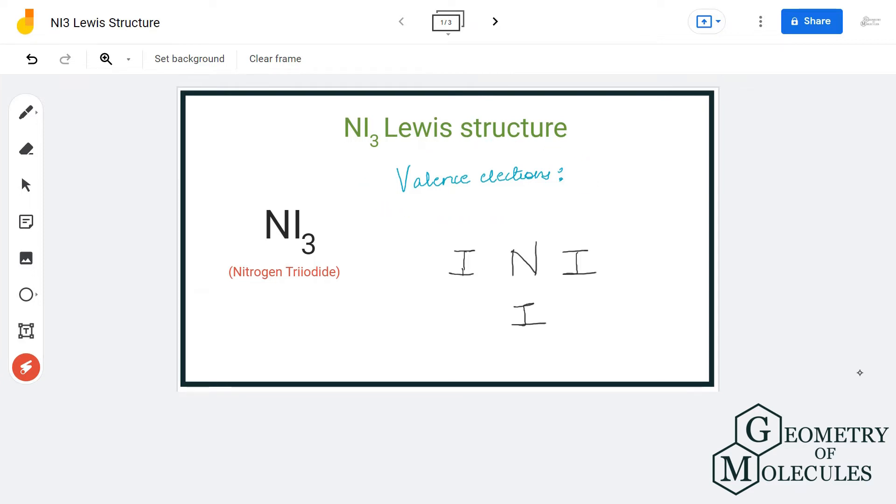Here we have one nitrogen atom which has five valence electrons. We have three iodine atoms which have seven valence electrons each, so in total we have 26 valence electrons for this molecule.